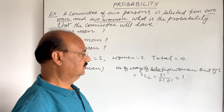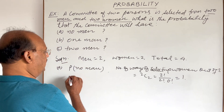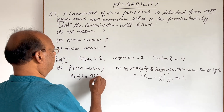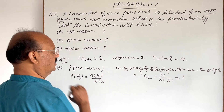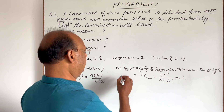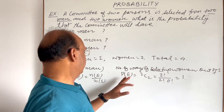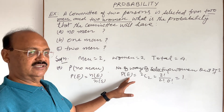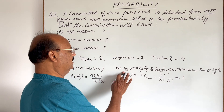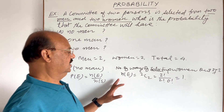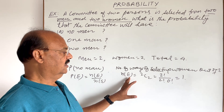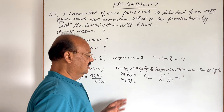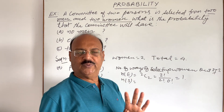So the probability P(E) is equal to N(E) divided by N(S). Here E is the event of selecting two women, meaning having no man. The number of elements in event E, N(E), is 1.